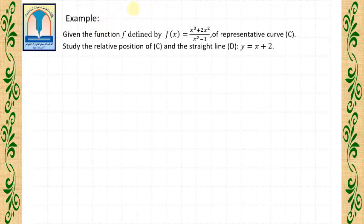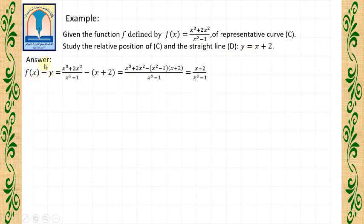Now let us solve the following example. Consider the function F defined by F(X) = (X³ + 2X²) / (X² − 1), with representative curve C. Study the relative position of C and the straight line D: Y = X + 2. Answer: first, we find F(X) minus Y, which equals (X³ + 2X²)/(X² − 1) minus (X + 2). We make the same denominator, expand and reduce, so we get (X + 2) / (X² − 1).